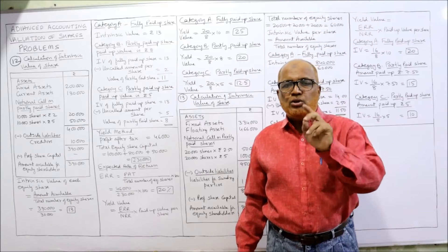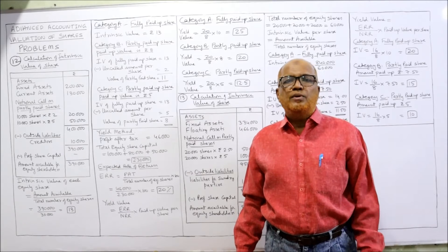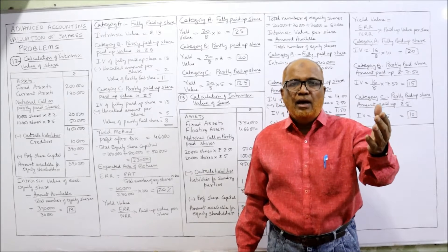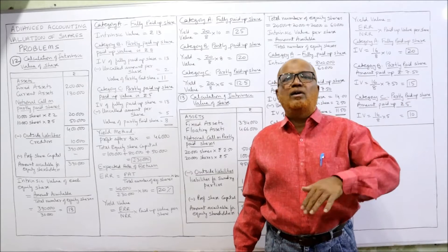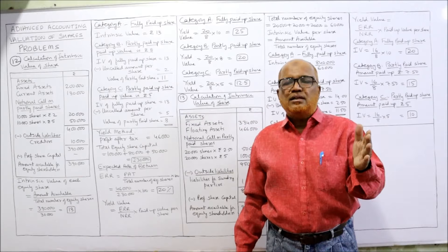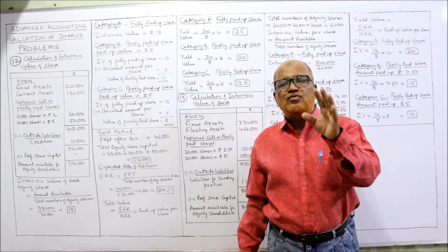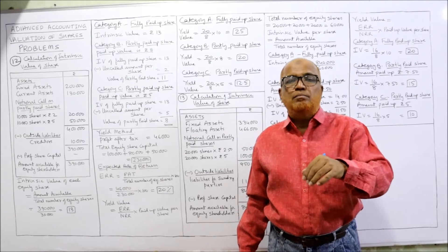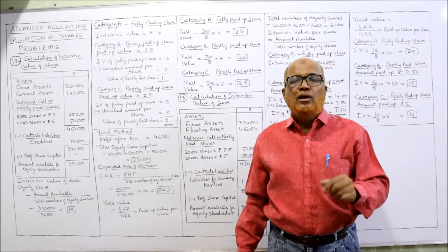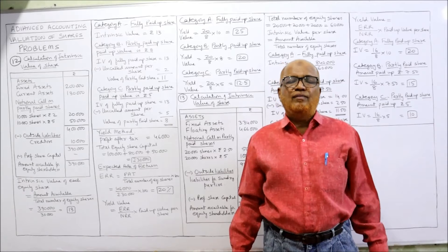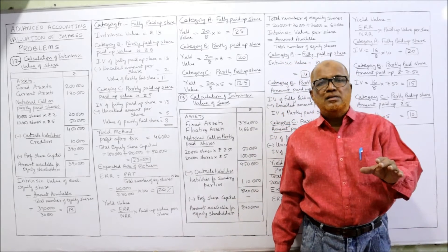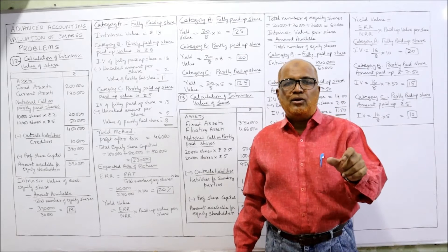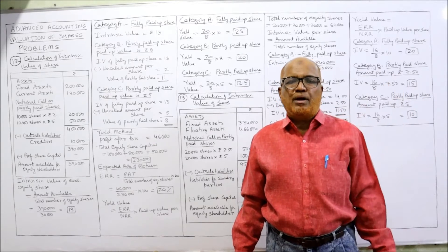So 2 rupees are not paid up. 10,000 into 2 = 20,000 rupees notional call — we imagine the company has made this call and the amount is received. Next, 10,000 shares of 10 each with 5 rupees paid up, so remaining 5 rupees: 10,000 into 5 = 50,000 notional call. By making these notional calls on partly paid shares, all shares become fully paid up.